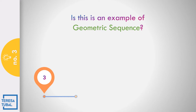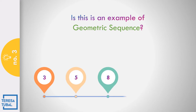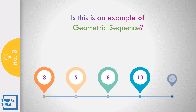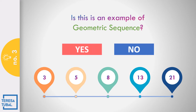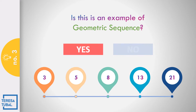Is this an example of the geometric sequence 3, 5, 8, 13, and 21? Yes or no? Correct! That is no because there is no common ratio from first up to the last term.